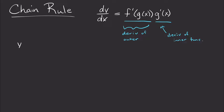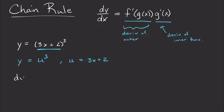For example, if we have the function y equals (3x + 2) all cubed, then our outer function is something cubed, and inside of that something — that u — is 3x + 2. We want to find the derivative of y with respect to x. To do this, we first find the derivative of y with respect to u, and then multiply that by the derivative of u with respect to x.